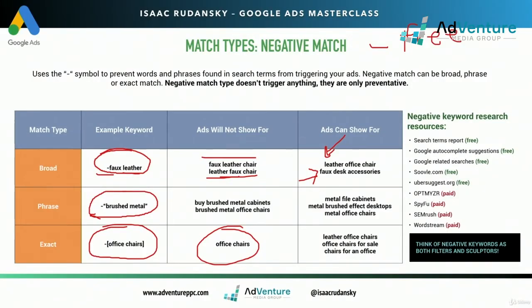You also need to understand research tools for negative keywords. Free tools include: the search terms report, Google Autocomplete suggestions, Google related searches, soovle.com — which gives great positive and negative keyword suggestions — and Ubersuggest.org. Paid options include Optimizer, SpyFu, SEMrush, and WordStream's agency management software, which makes finding and adding negative keywords a breeze. However, you can run highly professional campaigns using only the free research tools, as long as you spend the appropriate time using them and adding negative keywords to the right place with the right match type.